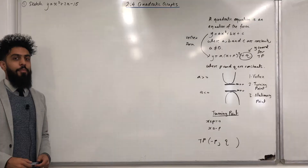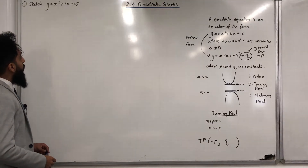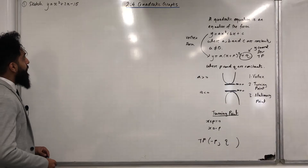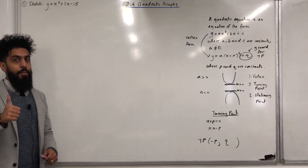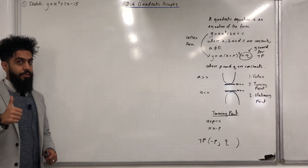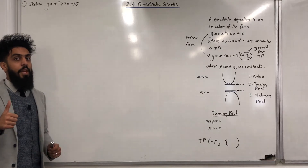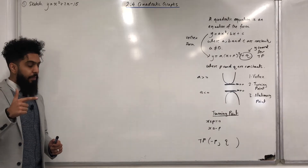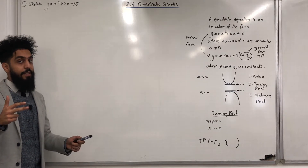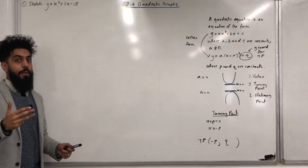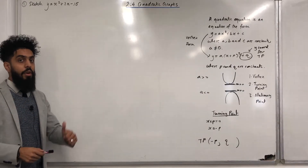Let's have a look at an example of sketching a quadratic graph. Example number one: sketch y = x² + 2x − 15. There are four basic steps. Step 1: look at the coefficient of x² — is it greater than 0 or less than 0? That determines the shape. Step 2: find the x-intercepts. Step 3: find the y-intercept. Step 4: find the coordinates for the turning point by completing the square.